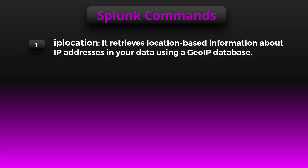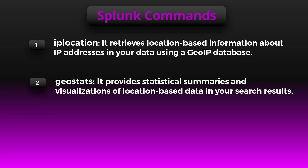Let's start with our first command: iplocation. Imagine you have a dataset with IP addresses and you want to know where those addresses are located in the world. It uses a database of IP addresses and their corresponding geographic locations to look up the country, city, and latitude/longitude coordinates for each IP address in your dataset.